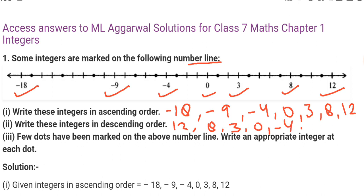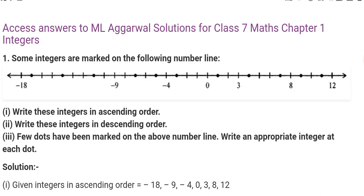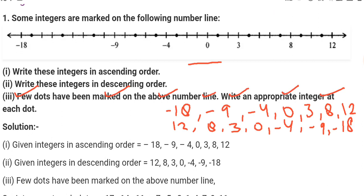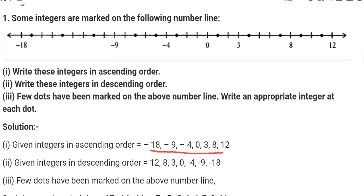What will be the descending order? Now just write the opposite way. So you can see the answers given in ascending order: minus 18, minus 9, minus 4, 0, 3, 8, and 12. And descending order: 12, 8, 3, 0, minus 4, minus 9, and minus 18.